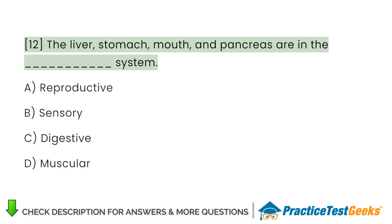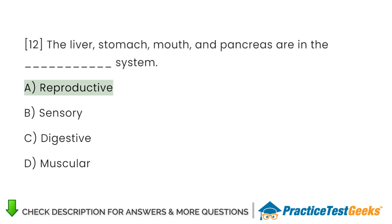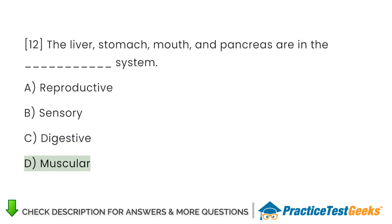The liver, stomach, mouth, and pancreas are in the system. A. Reproductive. B. Sensory. C. Digestive. D. Muscular.